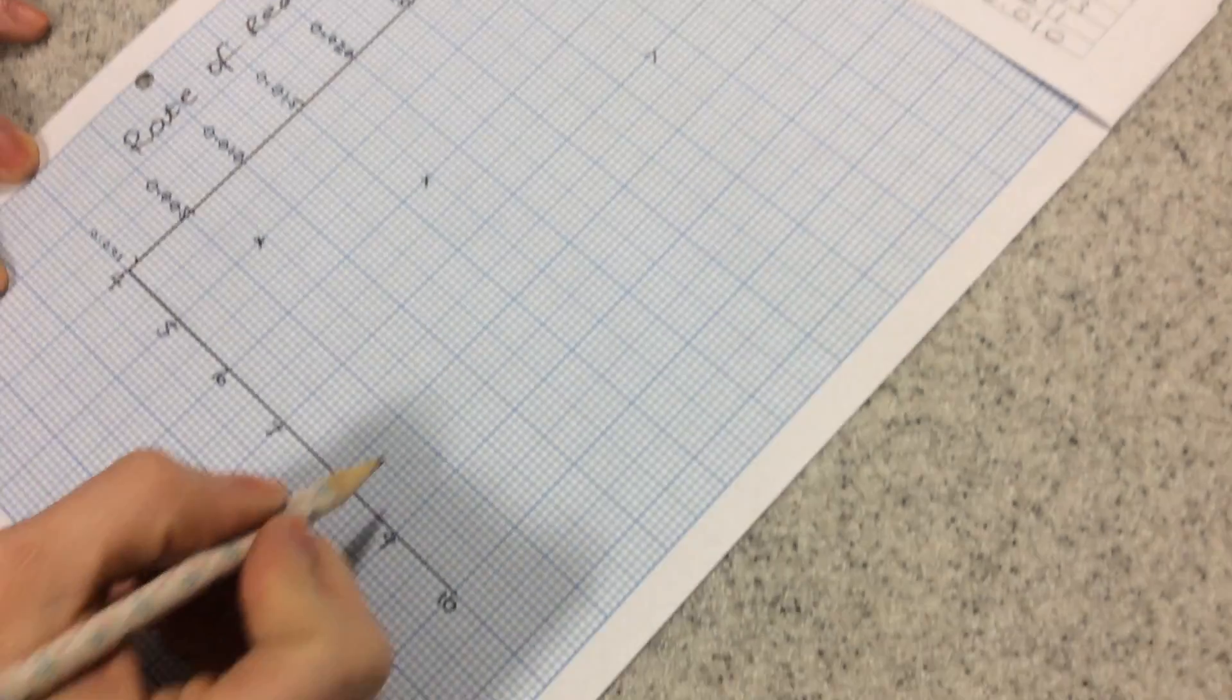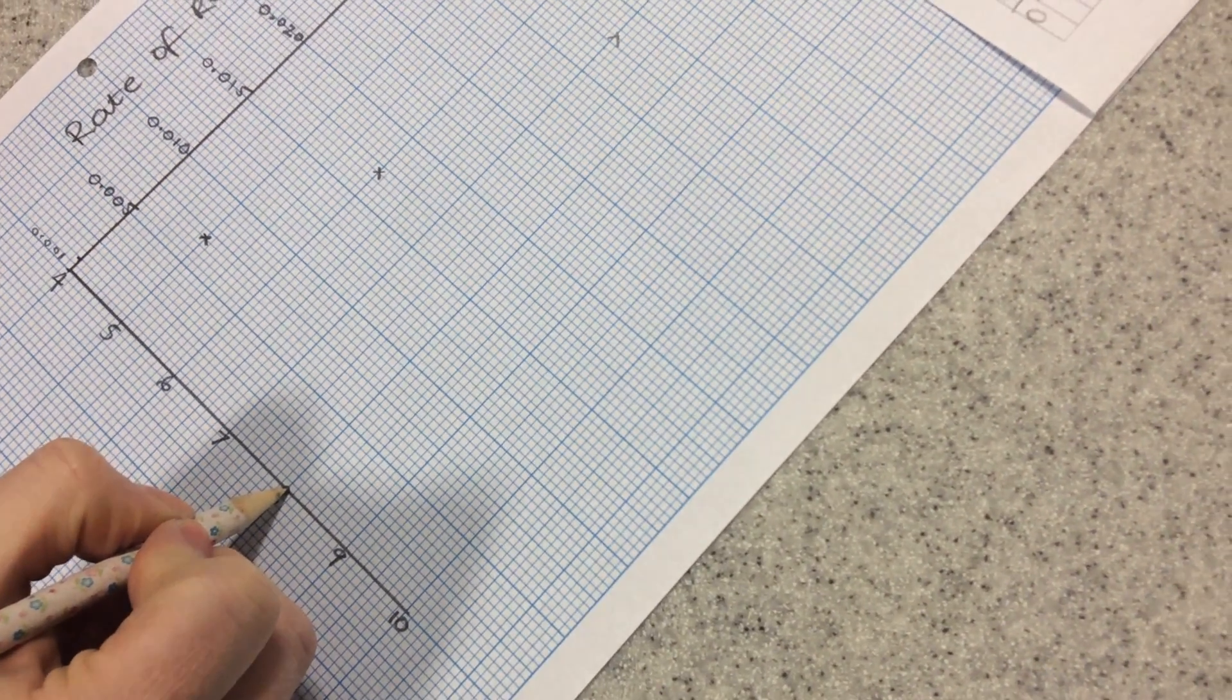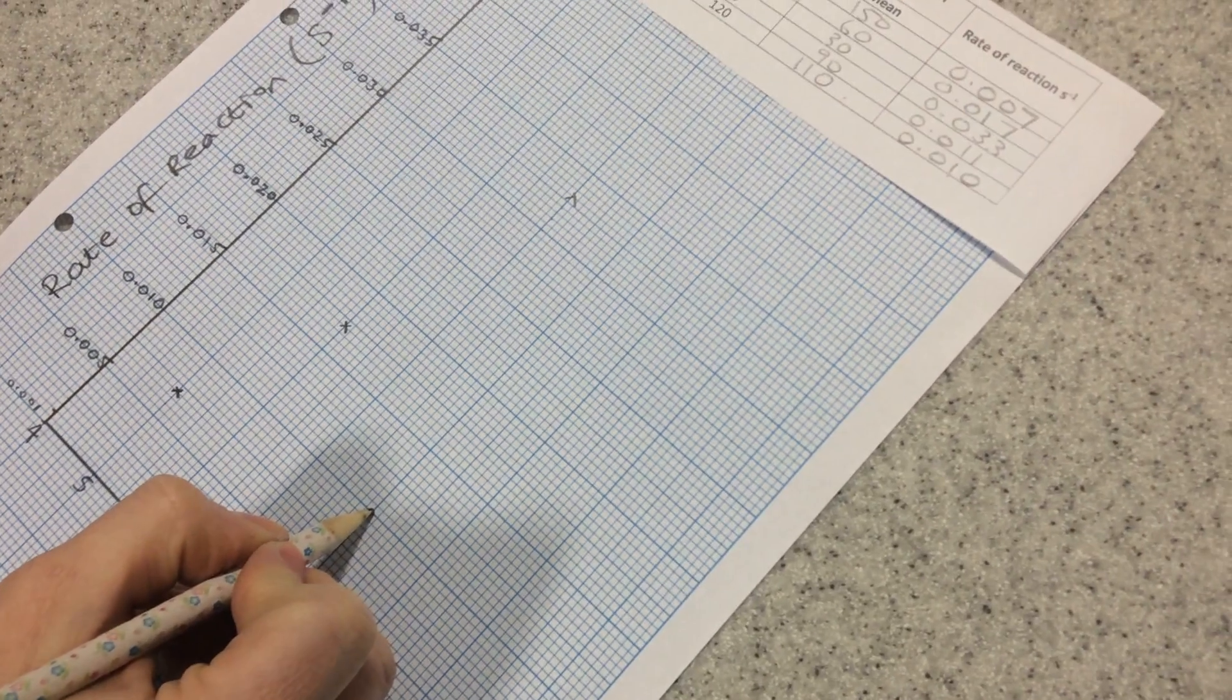And then at 8, I had 0.011, there's 10, 11.